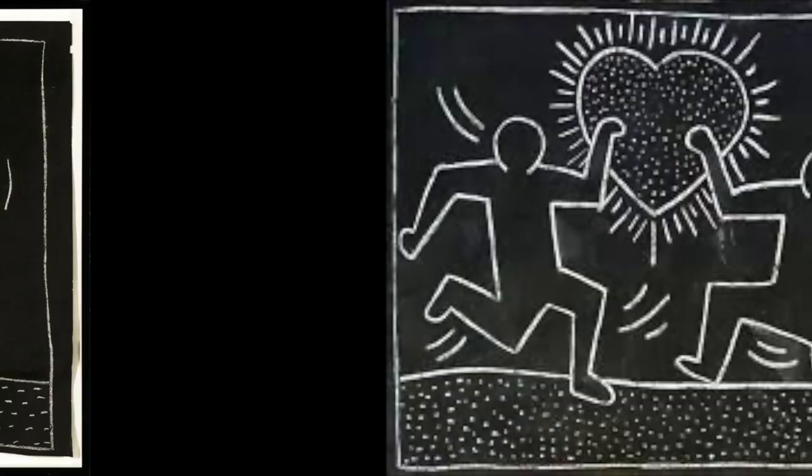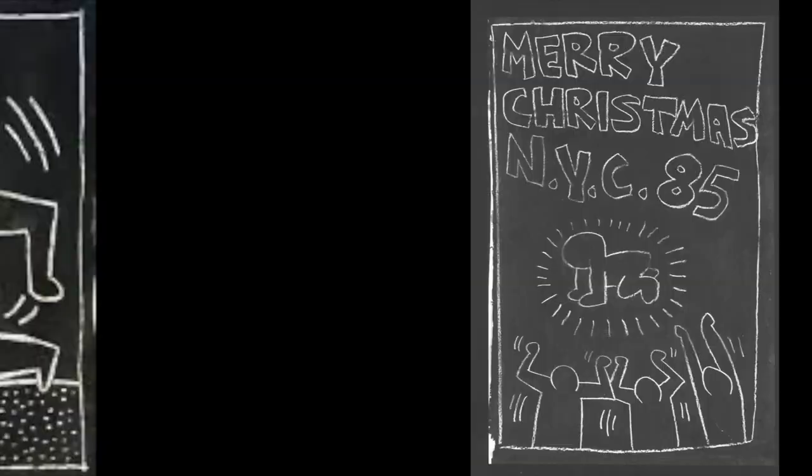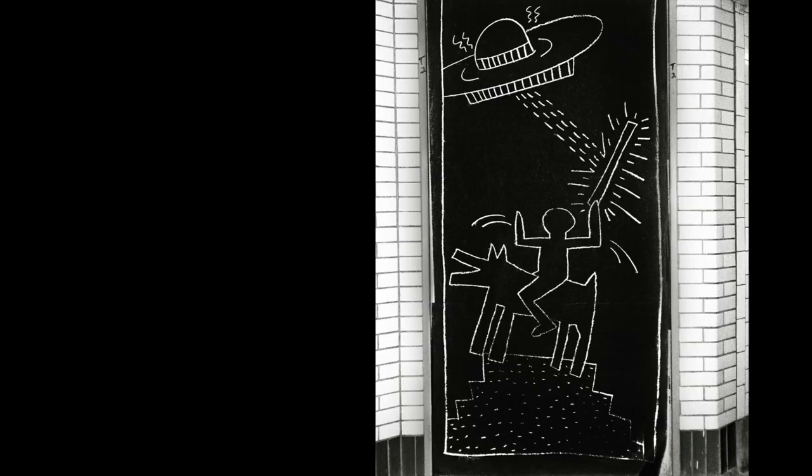Keith Haring made art for public consumption and discussion, and that brings me to the work that made him famous in the first place. Between 1980 and 1985, Keith Haring produced somewhere between 5,000 and 10,000 drawings inside the New York City subway system. If you were in New York during those years, you saw these drawings. New York had a rough end to the 1970s — blackouts, riots, and it narrowly avoided bankruptcy. So New York in the early 80s wasn't doing too well.